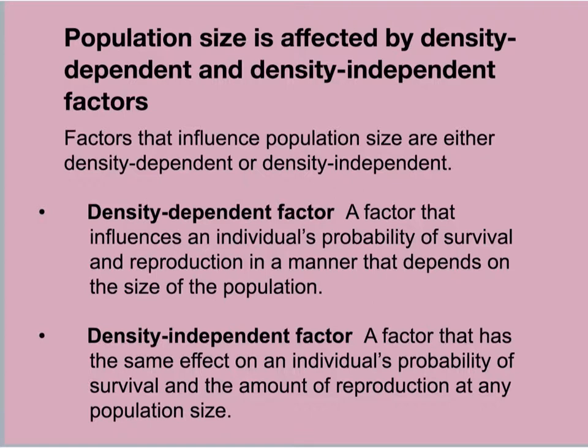Density-dependent factors affect an individual's probability to survive and amount of reproduction differently depending on whether the population is large or small. A density-independent factor, by contrast, has the same effect on a population's survival regardless of its population size. For example, if a tornado comes through a forest and kills every single hemlock tree, whether there were two trees or ten trees, that is a density-independent factor.